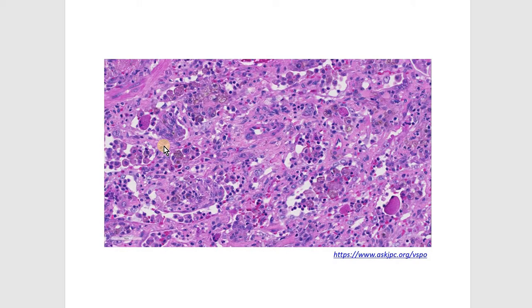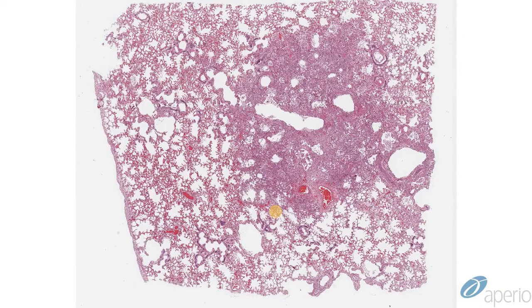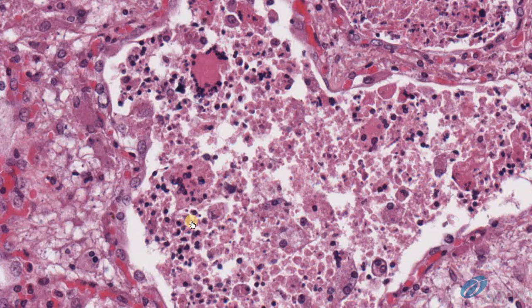We also saw the formation of multinucleated viral syncytia and the presence of eosinophilic intracytoplasmic and intranuclear inclusion bodies. And we saw the same lesion in the dolphin's lung, with areas of inflammation, necrosis, and hemorrhage, and the formation of multinucleated viral syncytia and the presence of eosinophilic intracytoplasmic and intranuclear inclusion bodies.